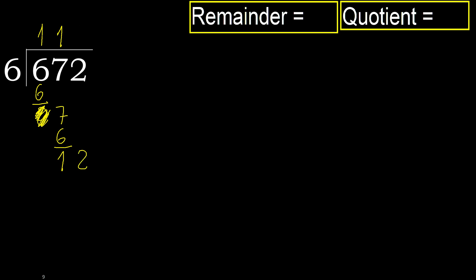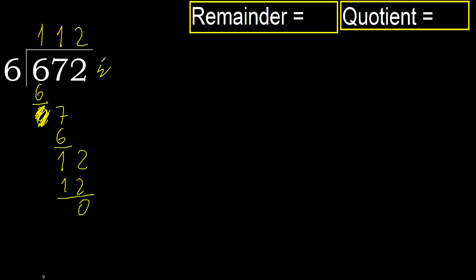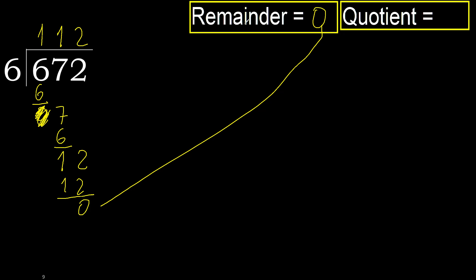6 multiplied by 3 is 18 — 18 is greater. Multiplied by 2 is 12 — is not greater. Ok, subtract. Next, there is no number, therefore finish it. Ok, 0. Therefore 672 divided by 6 is here.